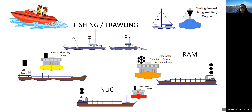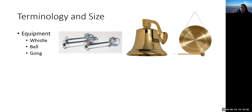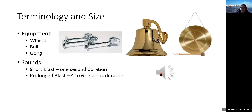That's a quick run through some of the more simple day shapes — there are others we'll talk about on Thursday. Now we're going to take a quick look at terminology and size for sound signals. The equipment on board for sound signals consists of the ship's whistle, a bell, and a gong. It depends on how big you are as to what you need to carry.